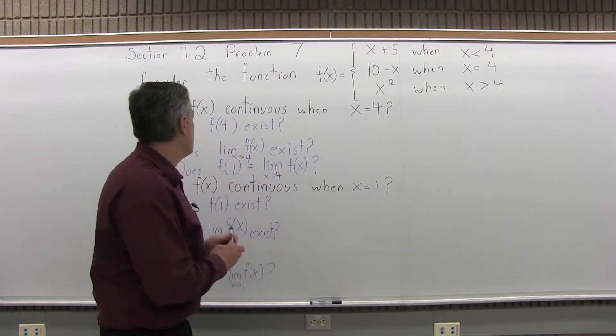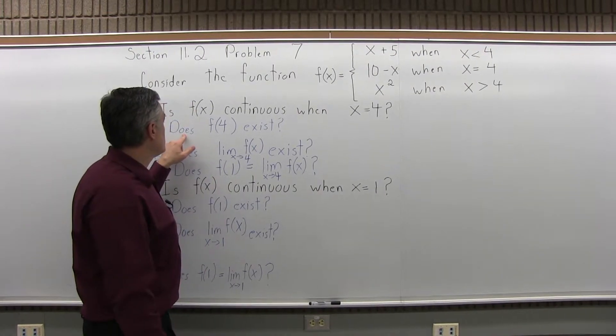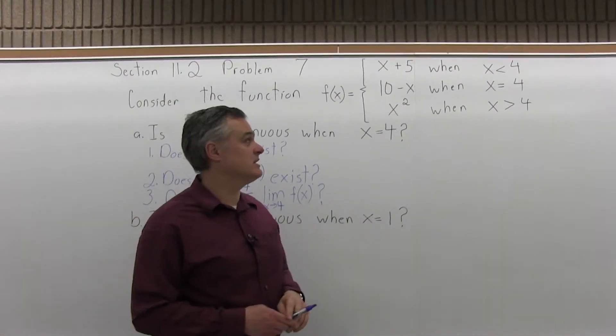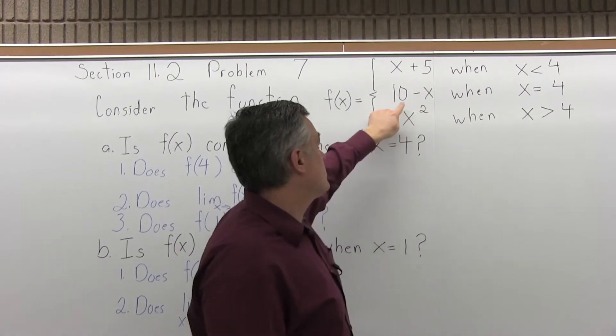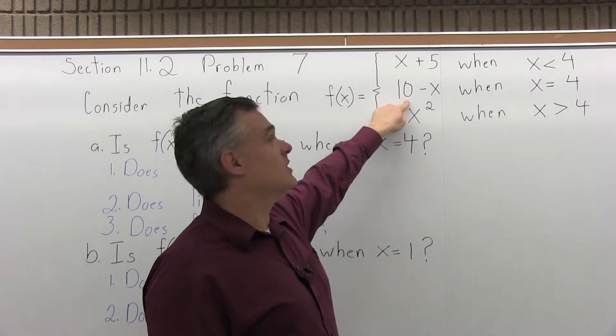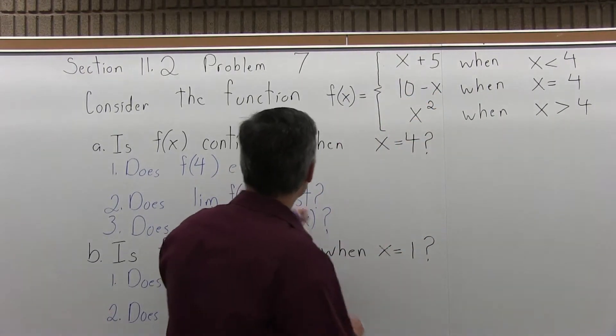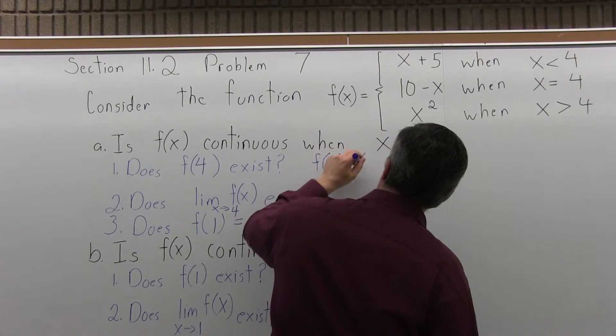So part a, is the function continuous when x equals 4? The first question is, does f of 4 exist? Can I put in a 4 and find an answer? And I can. The middle branch says if the input's 4, the output is 10 minus x or 10 minus 4, which would be 6. So f of 4 equals 6.